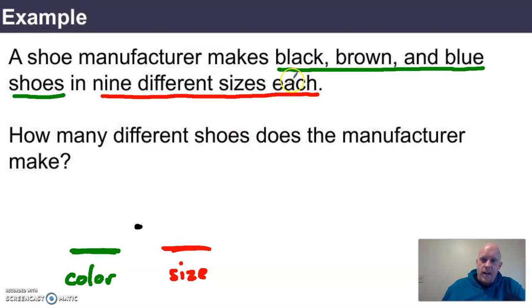Well, how many ways can I choose a color? I've got black, brown, or blue to choose from. I think I can choose three ways, or three different colors. For each of those colors, how many different sizes can be made? Well, there are nine of them.